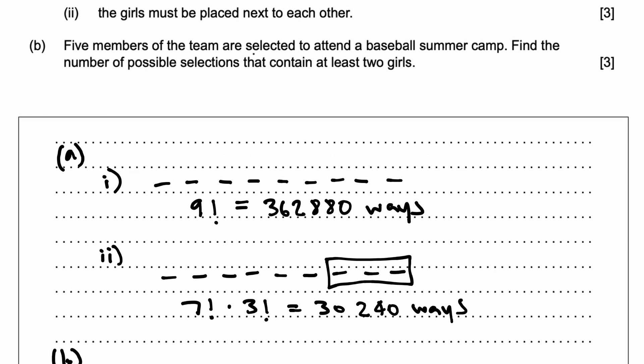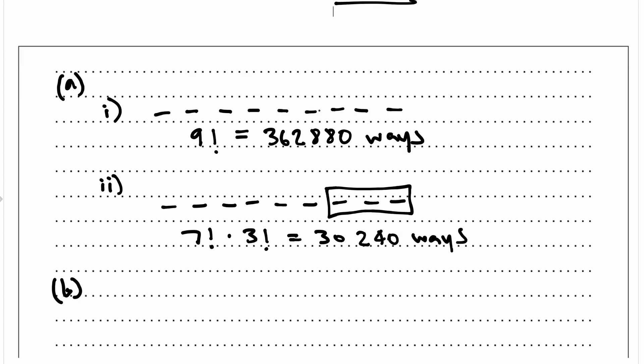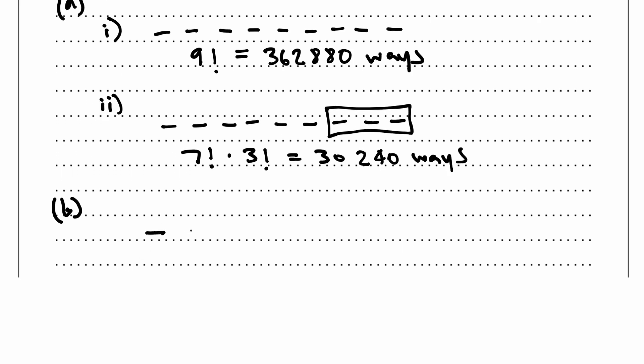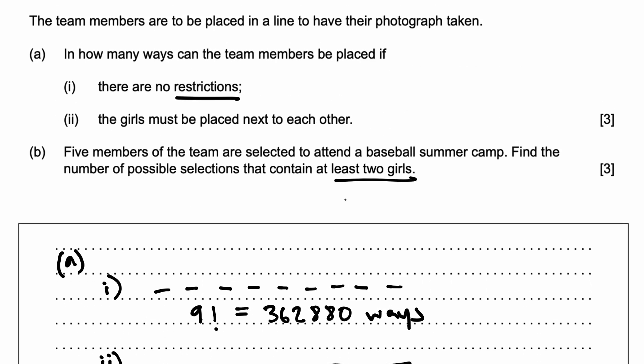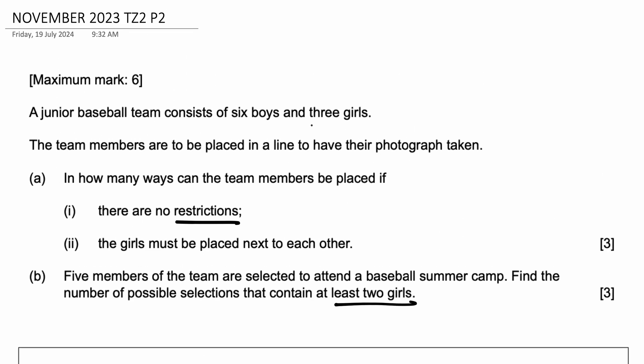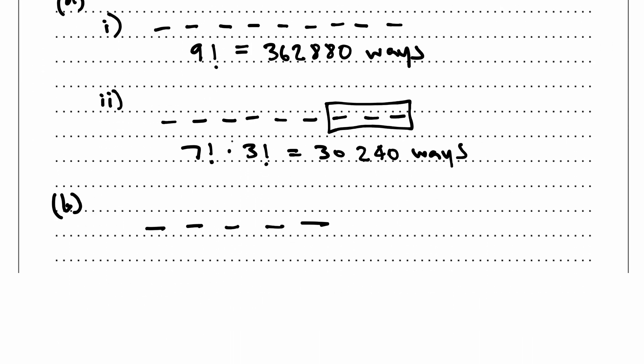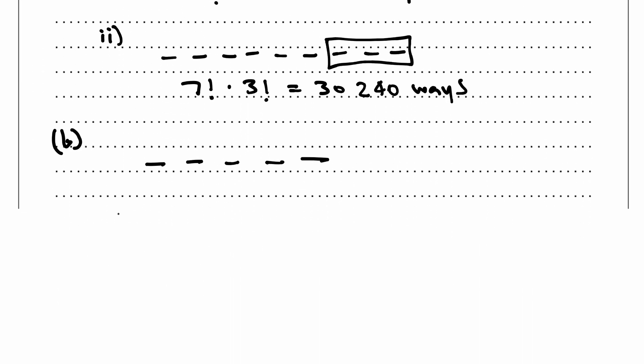Five members of the team are selected to attend a baseball summer camp. Find the number of possible selections that contain at least two girls. So let's draw five seats: one, two, three, four, five. We need at least two girls to fill this seating. And there are three total girls. There are three girls, six boys. So we have to consider two cases.